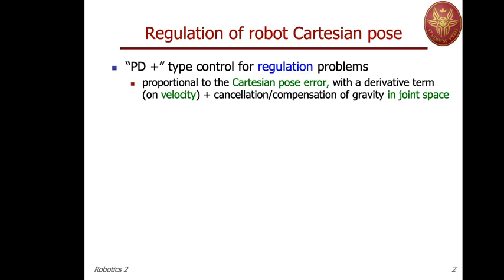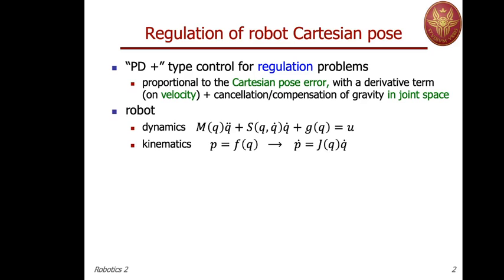We will start with the first type of controller intended for regulation of the desired Cartesian pose at the end-effector level. We consider a PD-plus type of control, including gravity from the beginning, and gravity may be fully cancelled by nonlinear feedback or compensated at the desired pose. The main aspect is that the error will be defined in terms of the Cartesian pose. We consider the dynamics neglecting dissipative terms, so on the right-hand side there will be only the control torque produced by the motors, plus the direct and differential kinematics.